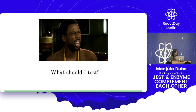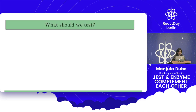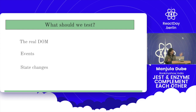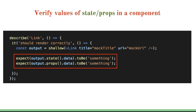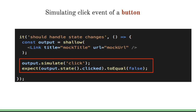So now the question is: I have Enzyme, I have Jest — what should I actually test? You should be testing the real DOM, that is your state and props — are they being rendered correctly? Secondly, your events are being fired or not. Also, the state transition from one state to another — is it happening in the correct way? These are examples where I'm playing around with the state and props. Enzyme provides a super thing: simulating an event. While in the test environment, you can simulate clicks, and Enzyme is the best way for this.